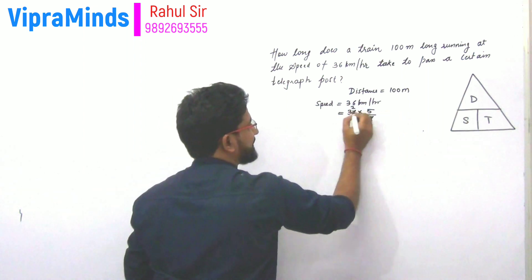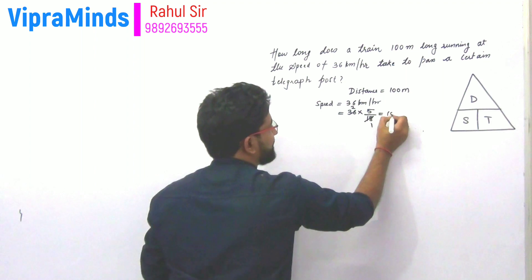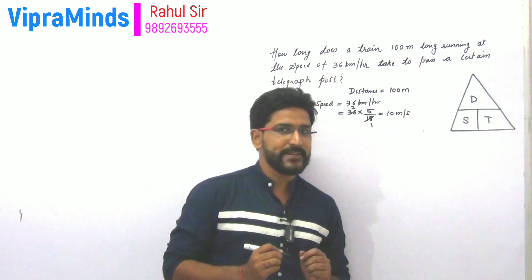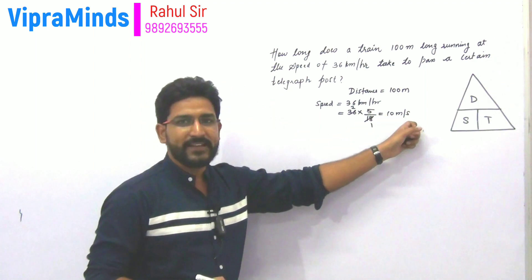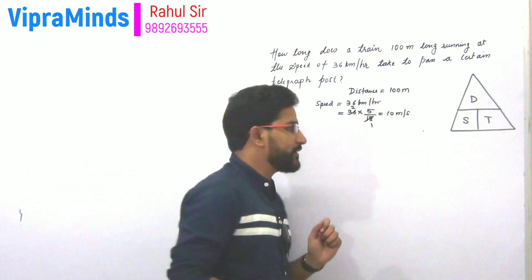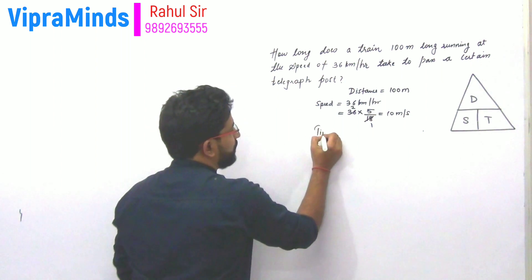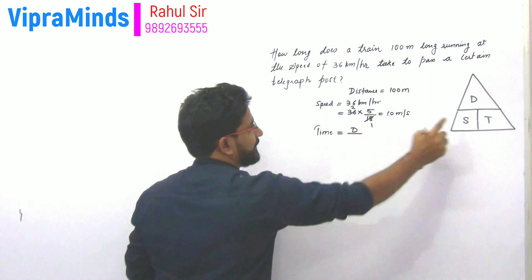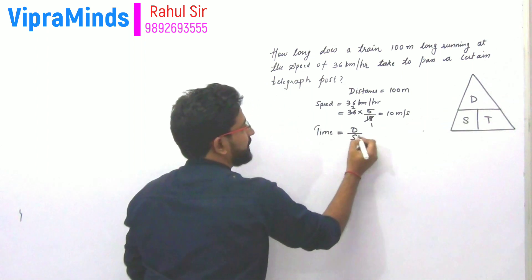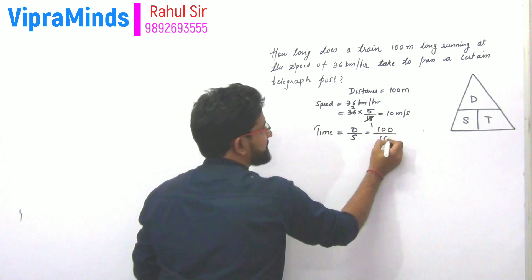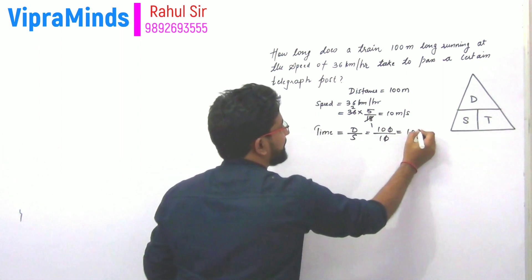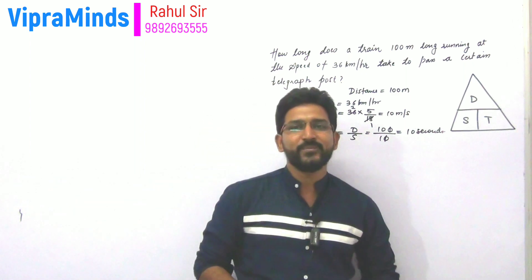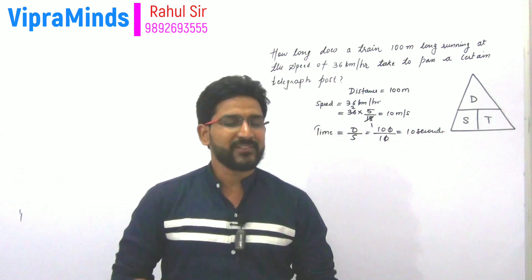18 into 2 is 36, and 2 into 5 is 10. So the speed gets converted to 10 meters per second. The speed of the train is 10 meters per second and the distance covered is 100 meters. Time equals distance divided by speed, so 100 divided by 10 equals 10 seconds. It will take 10 seconds to cross over that telegraph post.